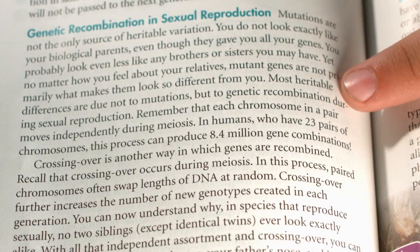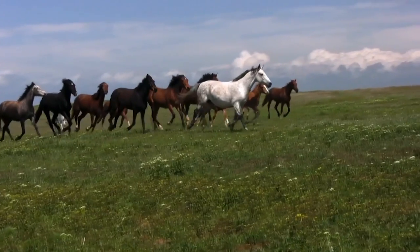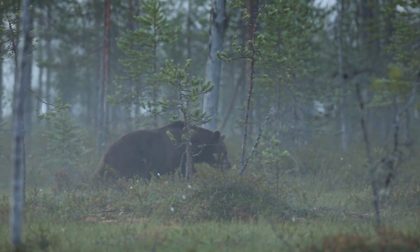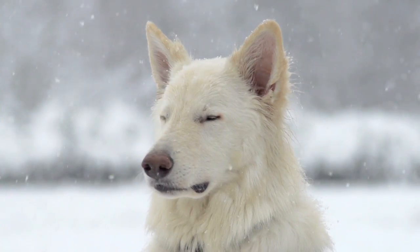So what about the other changes? Program change, or you called it genetic recombination. Look at what it says here: most heritable differences are due not to mutations but to genetic recombination. So God not only created all the animals, he also packed them with enough genetic information that would allow them to adapt to different environments and varieties we see today.